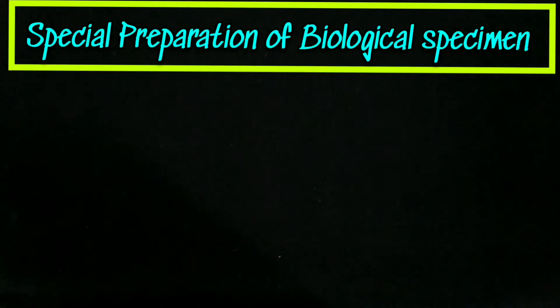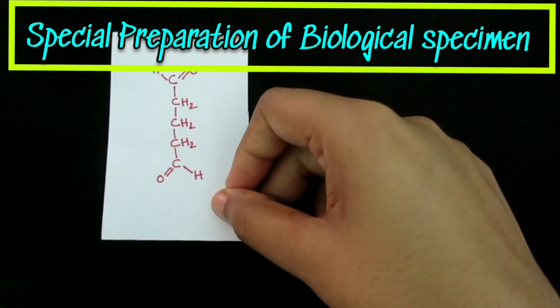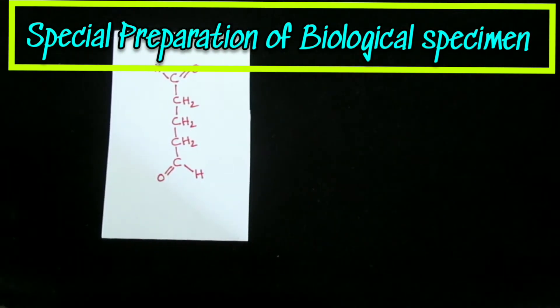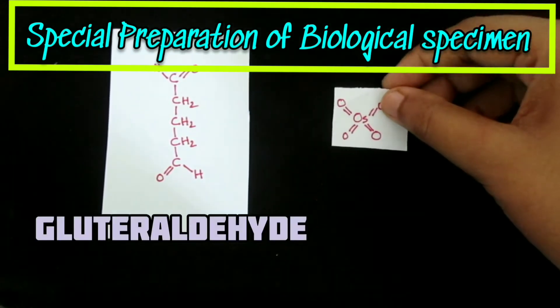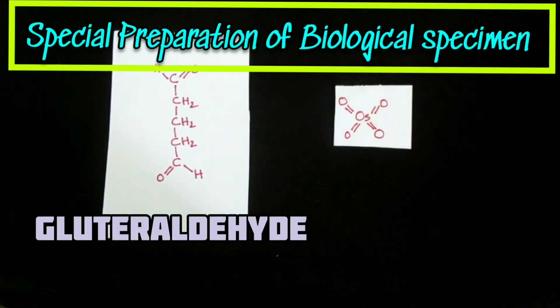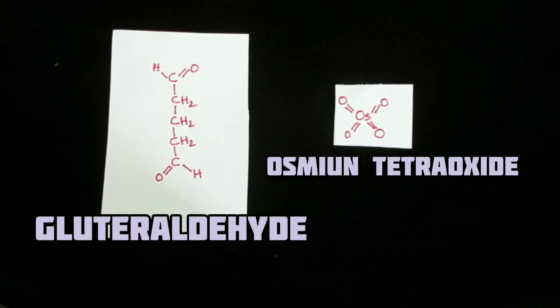Since the specimen is exposed to a very high vacuum in the electron microscope, living tissue is usually killed and preserved by fixation. First with glutaraldehyde which covalently cross-links protein molecules to their neighbors, and then with osmium tetroxide which binds to and stabilizes lipid layers as well as proteins.